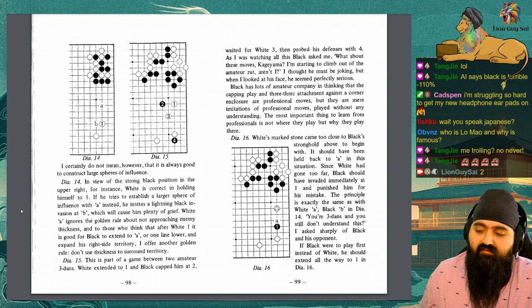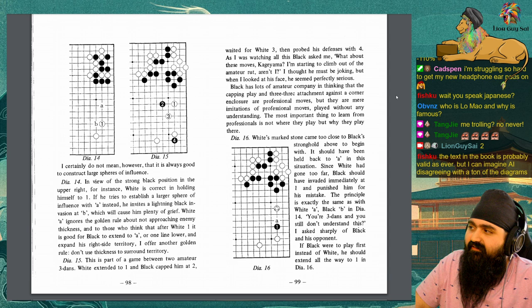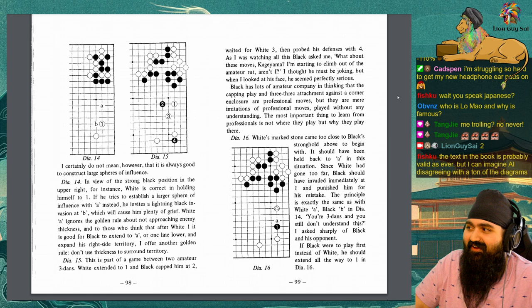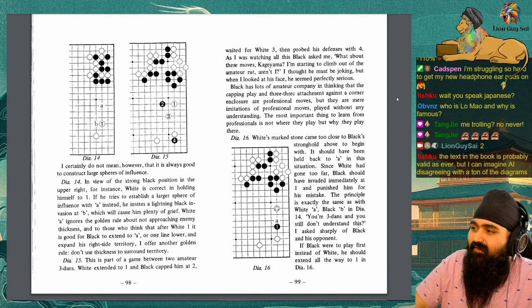Diagram 15. This is part of a game between two amateur 3-dans. White extended to 1 and black capped him at 2, waited for white 3, then probed his defenses with 4. As I was watching all this, black asked me, What about these moves, Kageyama? I'm starting to climb out of the amateur rut, aren't I? I thought he must be joking, but when I looked at his face, he seemed perfectly serious.